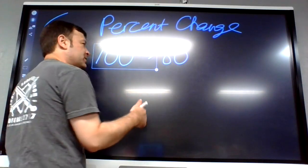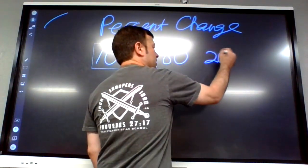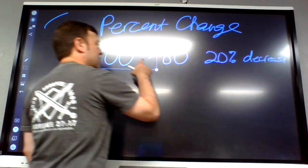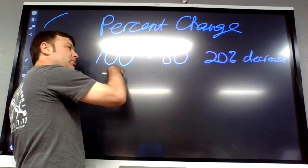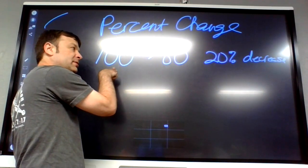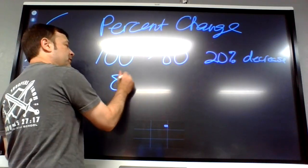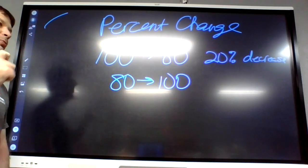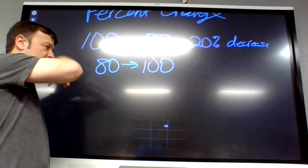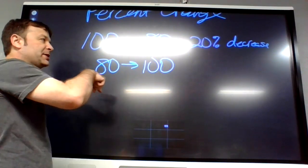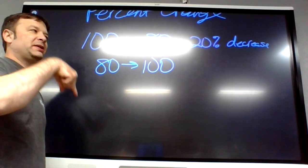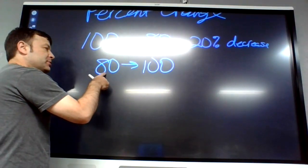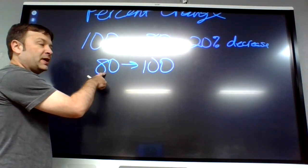20 percent — that would be called a 20 percent decrease, because it dropped by 20, which is 20 percent of 100. But what if it went from 80 to 100? It increased by 20, but it did not increase by 20 percent, because 20 is not 20 percent of 80.